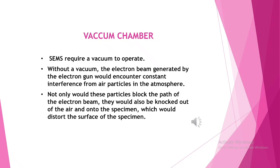When a scanning electron microscope is used, the sample and the column must always be in a vacuum. A vacuum environment means that most of the air molecules have been removed from the inside of the microscope. You can think of vacuum in terms of gas density — there are a certain number of gas molecules in a given space.